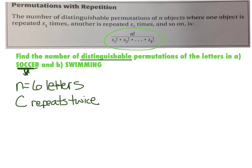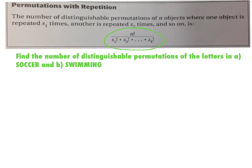So we have to take the number of letters, N is 6 letters, and then C repeats twice. So if all the letters were different, 6 factorial would suffice. But since C repeats twice, we have to put over 2 factorial. And so we've got 720 over 2, which gives us 360. So if they were all different letters, it would have been 720 different ways. But since the C repeats, we have to divide that by 2. So it's only 360 different ways because we can't distinguish one C from the other.